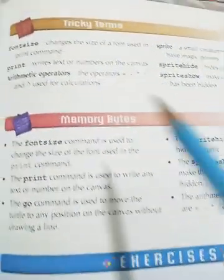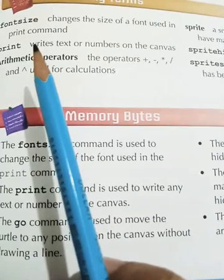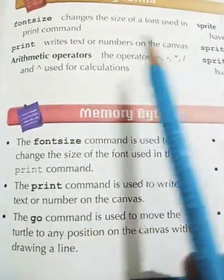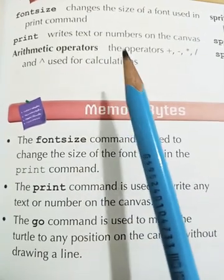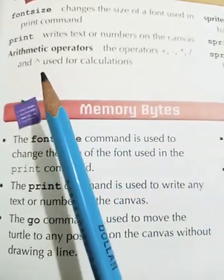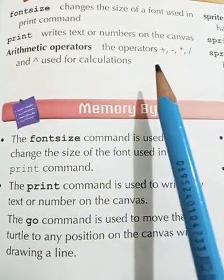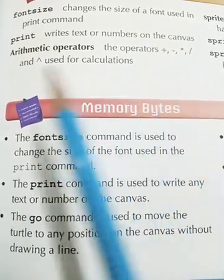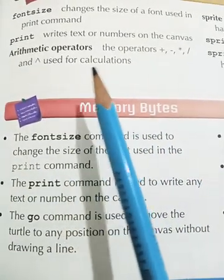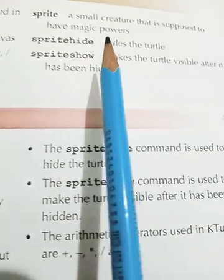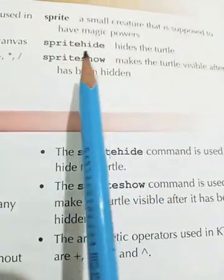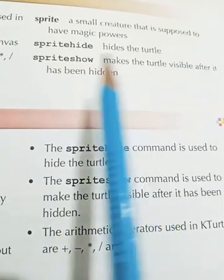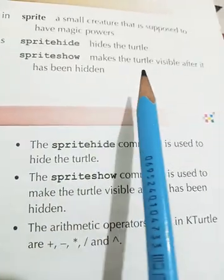Come to page number 61 for the tricky terms. Font size changes the size of a font used in the print command. Print writes text or numbers on the canvas. Arithmetic operators — plus, minus, multiplication, division — are used for calculations. Sprite is a small creature supposed to have magic powers. Sprite hide hides the turtle, and Sprite show makes the turtle visible after it has been hidden.